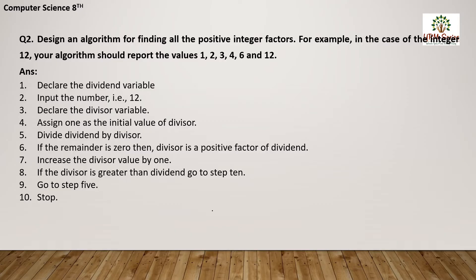We declare the divisors variable, which can also be named x, y, z, or anything. You should be clear on the concept of dividend and divisors. Step number 4 is assign 1 as the initial value of divisors. We assign the value 1 to the divisors because 1 is a divisor of all numbers.